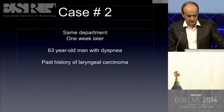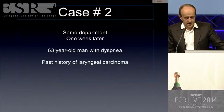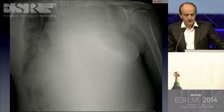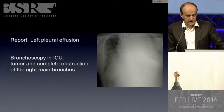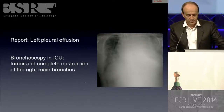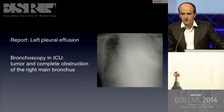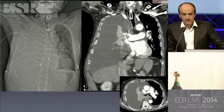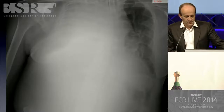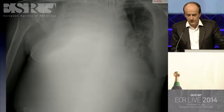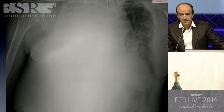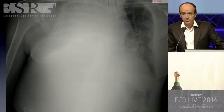You may think this kind of error never happens twice. In the same department 10 days later: a 63-year-old man presenting with dyspnea and a past history of laryngeal carcinoma. The radiograph was reported as showing a left pleural effusion. However, at bronchoscopy in the ICU, a tumor and complete obstruction of the right main stem bronchus was observed. At CT, the effusion is on the right. Looking at the radiographs again, it's quite difficult to identify the right and left side with certainty — the air in the left flank more likely corresponds to the descending rather than the ascending colon.